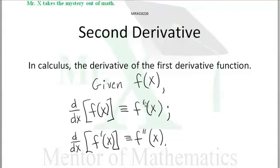One way we note that is with little primes here. Given some function of X, we take the derivative of that function with respect to X and we'll note that as F prime of X, and that's our first derivative.